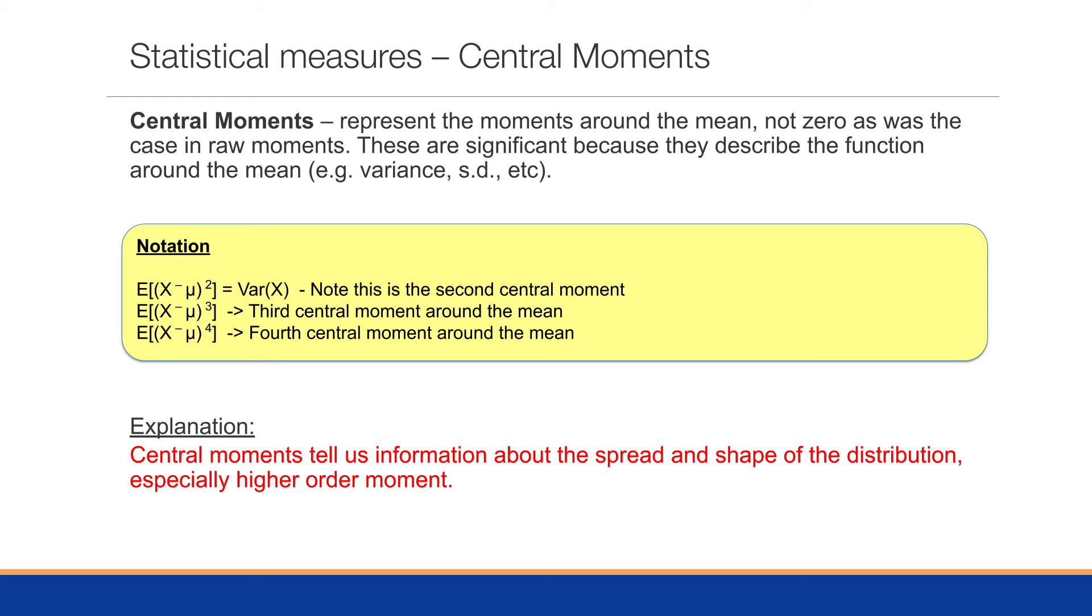These central moments are significant because they describe the function or this probability distribution around the mean. So we do the notation here as the expected value of X minus mu, so the particular X variable or identity, or the particular X minus its average squared, which is going to be equal to the variance. And this is the second central moment. We'll know this as our second central moment, which is the variance.